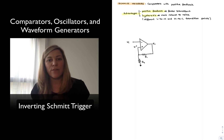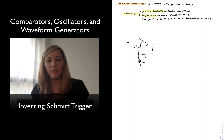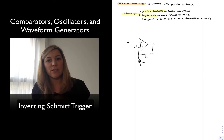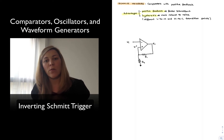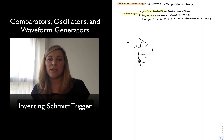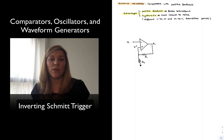They also have something called hysteresis. Hysteresis simply means that they have a different transition point when the output is going from a high to a low, and when the output is coming from a low to a high. As we shall see, that hysteresis provides more robustness of the comparator with respect to noisy input.